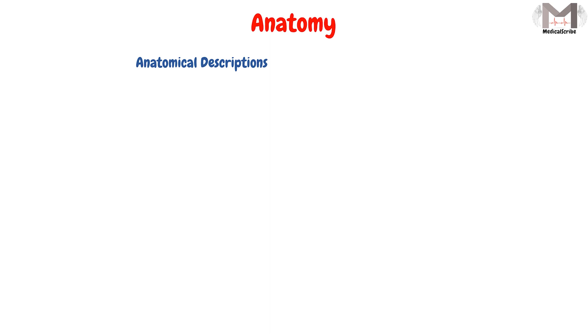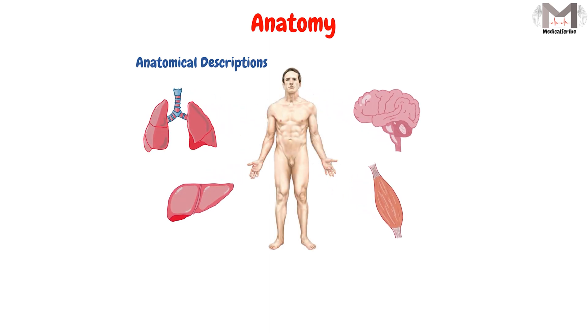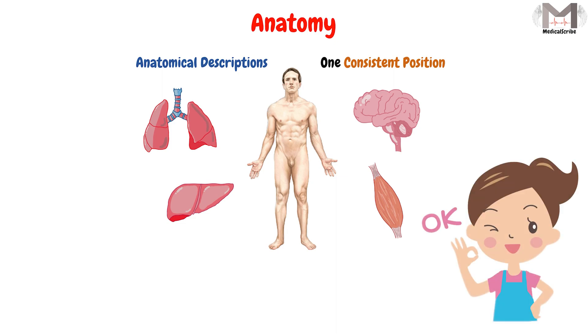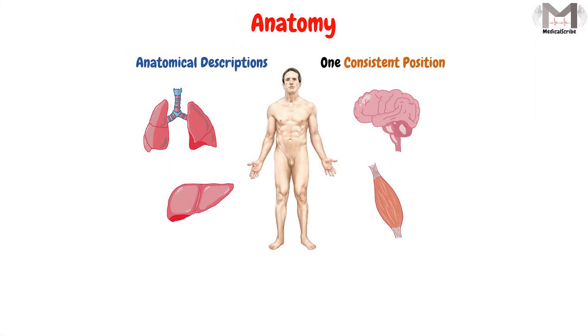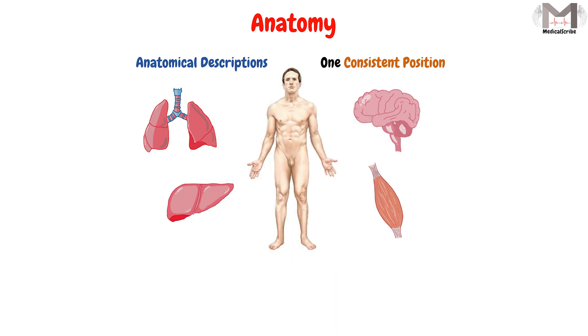In anatomy, we have something important, which is that all anatomical descriptions that describe the human body are expressed in relation to one consistent position. This occurs in order to ensure that the descriptions are clear to everyone and not ambiguous. So all of us when we hear a description, we have a baseline in our mind, and the explainer will describe the human body structures on the same baseline that all agreed with. So this is the standard position called the anatomical position.